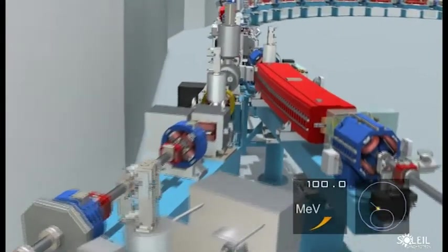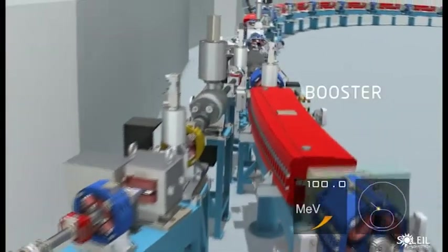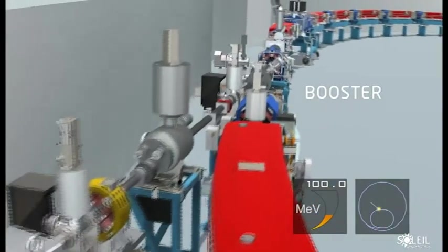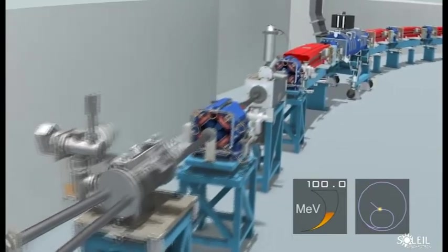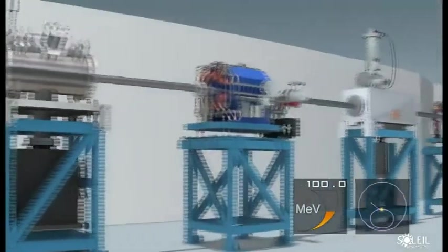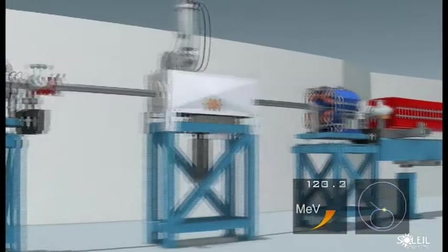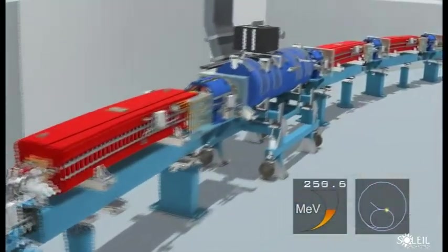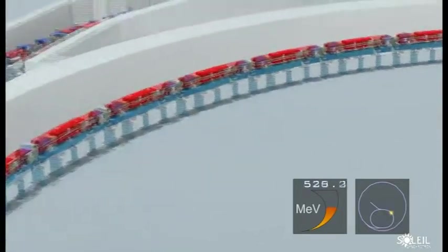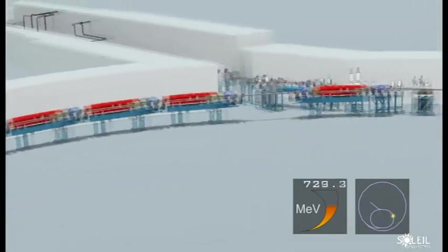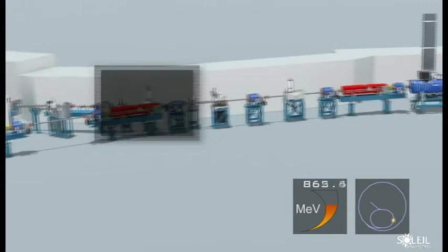At the end of the linac, the electrons are injected into the booster, the second synchrotron accelerator, a ring with a circumference of 156 meters. It continues to control the size and energy of the electron bunches. The electrons can travel round bends due to the magnetic force exerted on them. This time, it is bending magnets that intervene, colored red on the machine.